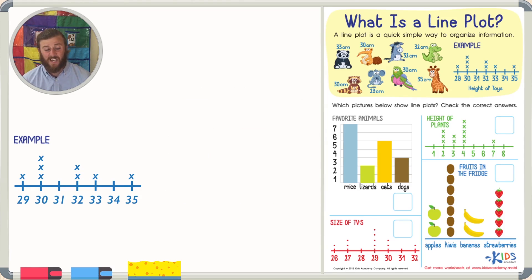Let's take a look at our next picture. Our next picture shows the heights of plants and already I'm beginning to think it is a line plot. First of all, I see the numbers on the bottom, just like in my example, so I think that is one reason it is a line plot. Another reason I think it's a line plot is I see the X's above some of the numbers.